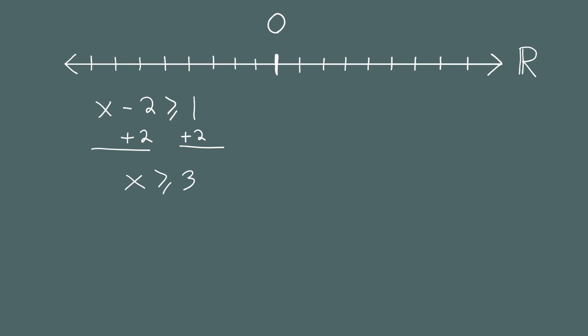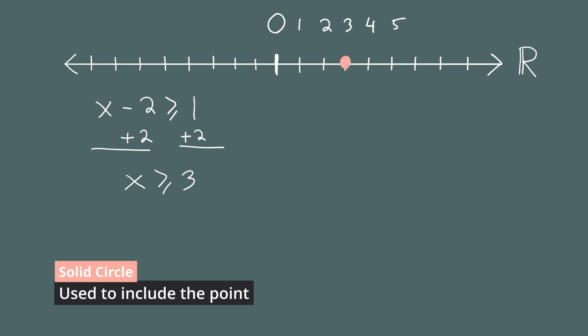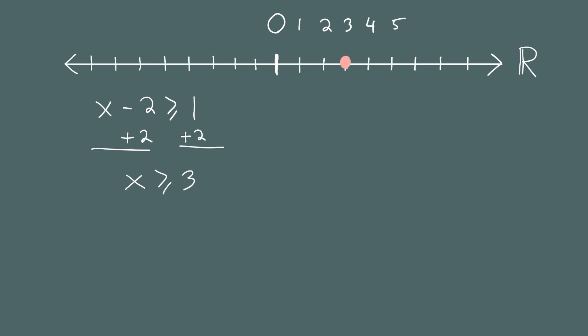Let's draw a picture of the solutions on the real number line, labeling 1, 2, 3, 4, 5. We want to highlight all numbers greater than or equal to 3. Here we use a solid circle because we want to include the point 3. An open circle means that point is not included; a solid circle means it is included. We highlight the region to the right and draw an arrowhead.